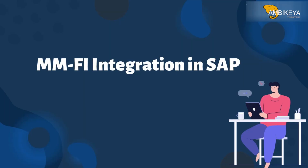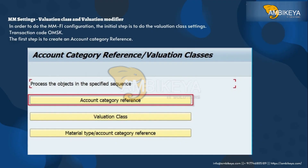I am going to explain MM-FI integration in SAP. Hope this will be helpful. The key settings involve valuation class and valuation modifier. In order to do the MM-FI configuration, the initial step is to do the valuation class settings — transaction code OMSK.